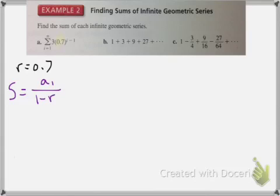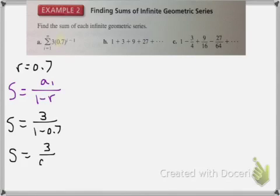Here, in this first example, I can see that my r value is 0.7, which means that I can find the sum. So I'm going to use my equation that we just learned. And I see that a sub 1 is 3. So 3 over 1 minus r, which is just 3 over 0.3, which is 10. That's it.